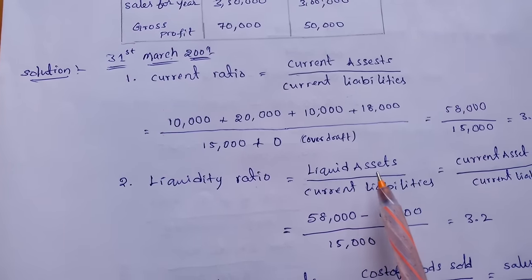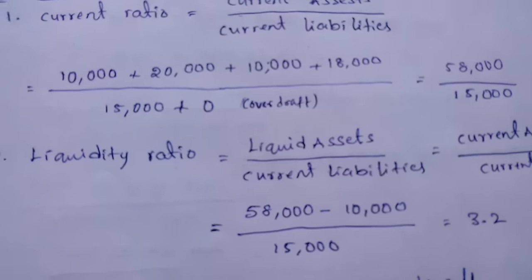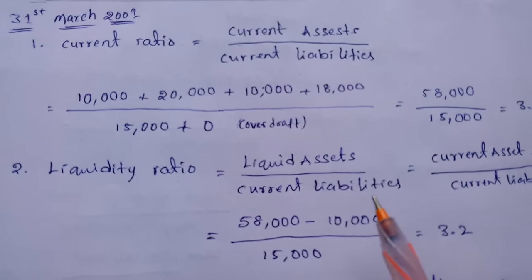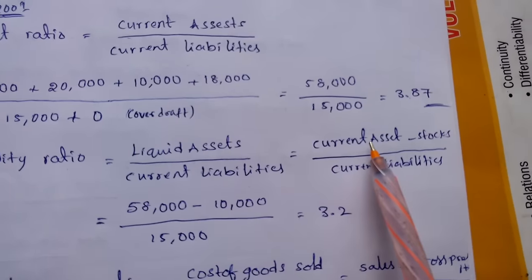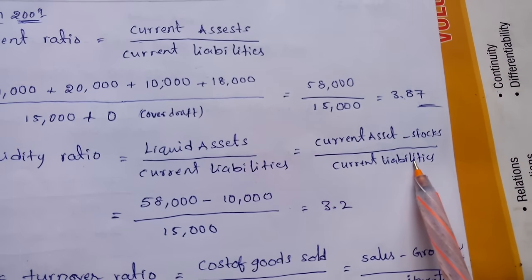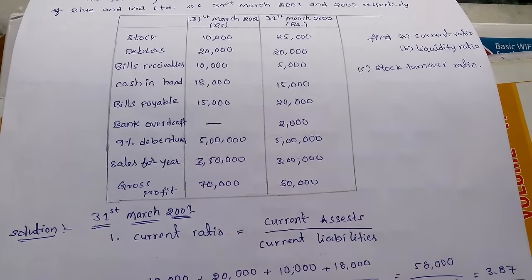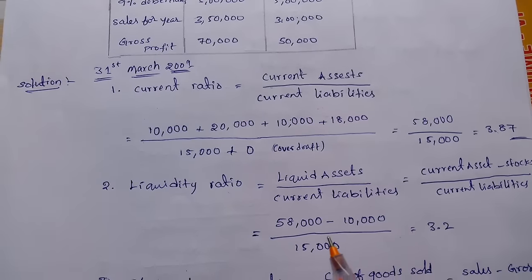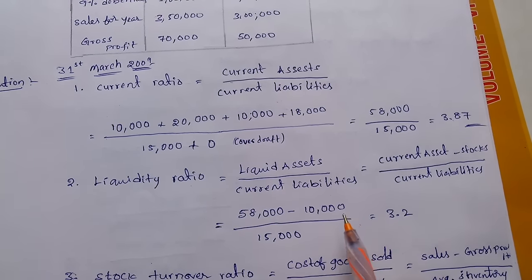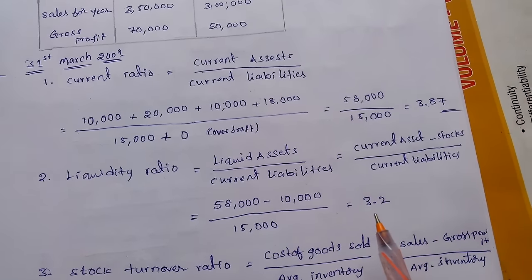Next we need to find out the liquidity ratio. The formula is liquid assets divided by current liabilities. Liquid assets are nothing but quick assets. The formula for quick assets is current assets minus stocks divided by current liabilities. Current assets and stock are given in the problem, that is 58,000 minus 10,000 divided by 15,000. Simplifying this we get 3.2. This is the liquidity ratio.